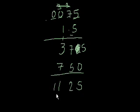But in our answer, we only have 4 digits. So how can we get 5 numbers behind the decimal point? Well, we start here. We say 1, 2, 3, 4.